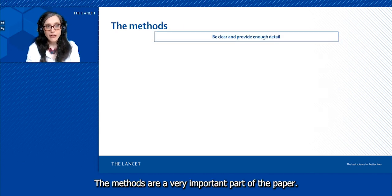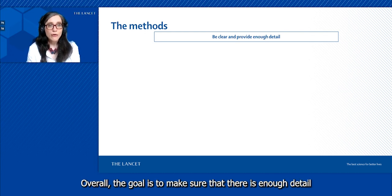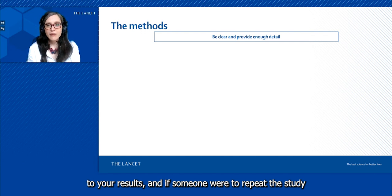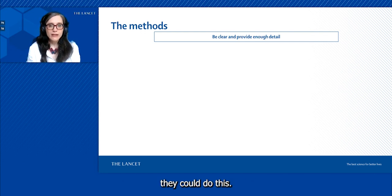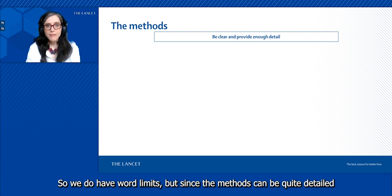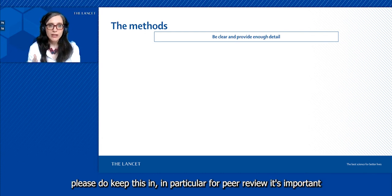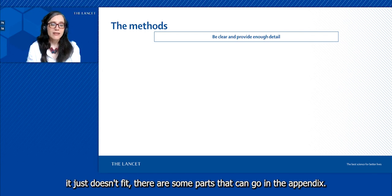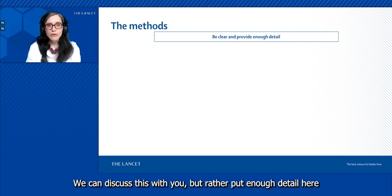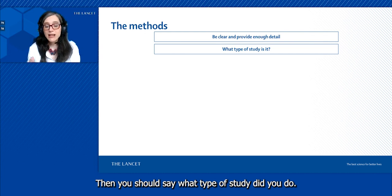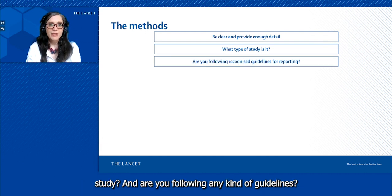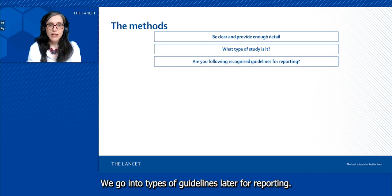The methods are a very important part of the paper. Overall, the goal is to make sure that there's enough detail that readers can understand what was done, how did you come to your results, and if someone were to repeat the study they could do this. We do have word limits, but since the methods can be quite detailed, please don't skimp on this. For peer review, it's important that the peer reviewers can assess the paper.